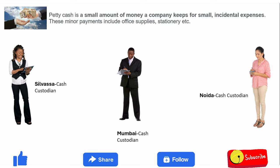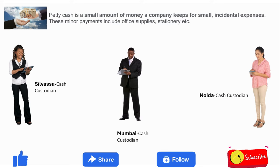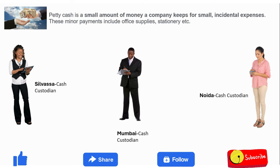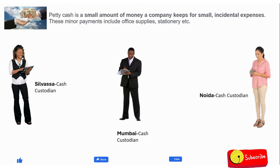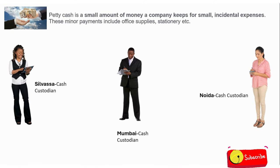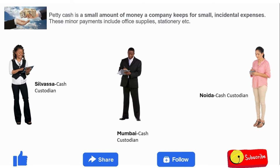Petty cash is a small amount of money a company keeps for small or incidental expenses. These minor payments include office supplies, stationery, tea, coffee, snacks, etc. Assume there is a manufacturing company or finance company with some branches. In each branch there is a receptionist or cash custodian who maintains a cash register, and from the cash register they release cash to workers for small requirements like office supplies and stationery.